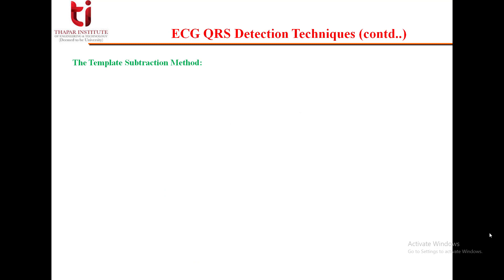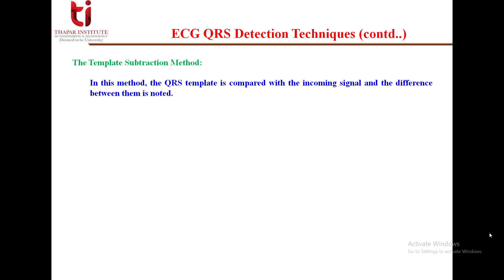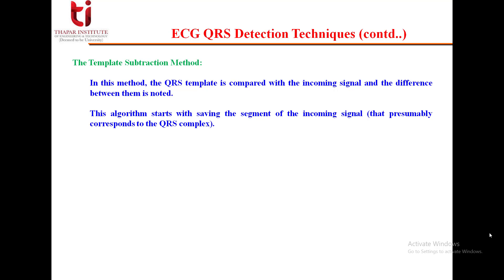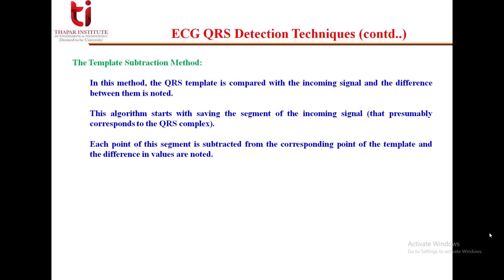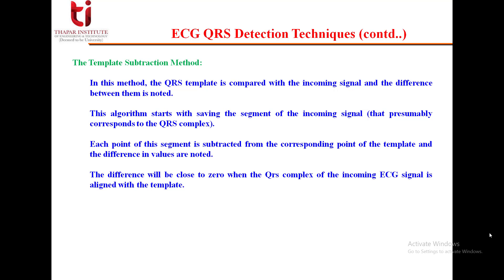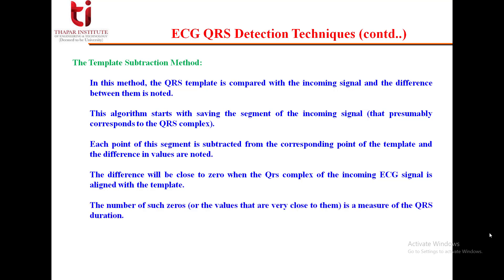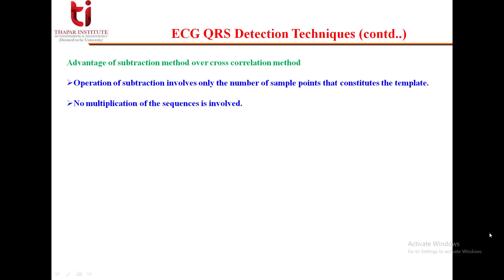The next method is the template subtraction method. In this method, the QRS template is compared with the incoming signal and the difference between them is noted. The algorithm starts by saving the segment of the incoming signal that presumably corresponds to the QRS complex. Each point of this segment is subtracted from the corresponding point of the template and the difference in values is noted. The difference will be close to zero when the QRS complex of the incoming ECG signal is aligned with the template. The number of such zeros or values close to them is a measure of the QRS duration.